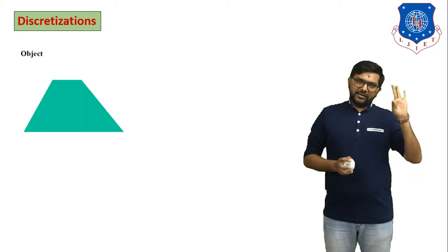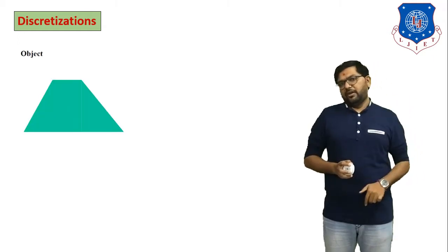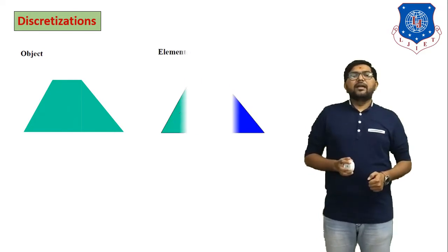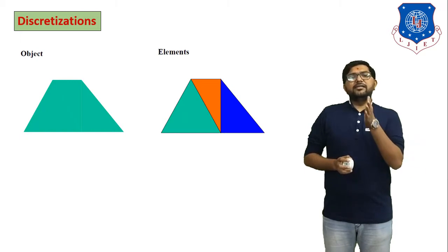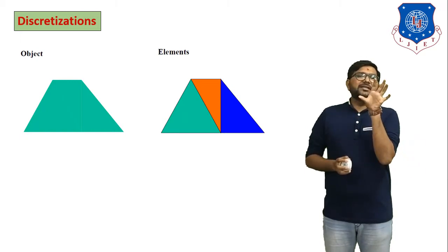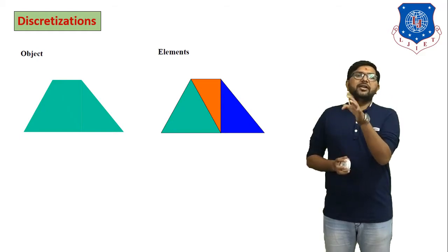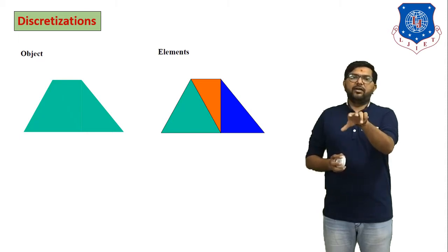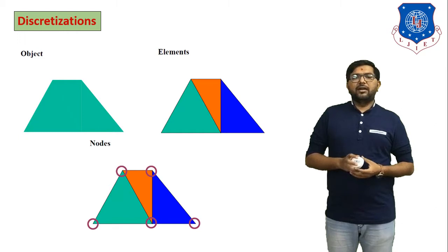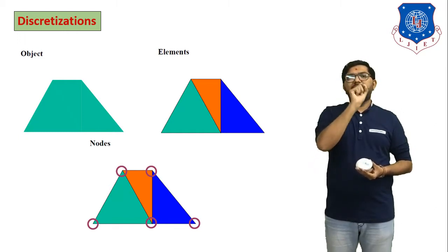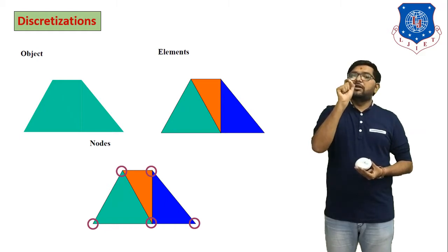We will understand these three definitions using three figures. In the first figure, one continuous object is shown. In the second figure, we divide that object into three parts, indicated by three different colors. In the third figure, three elements are connected with each other through Nodes, indicated by red circles.